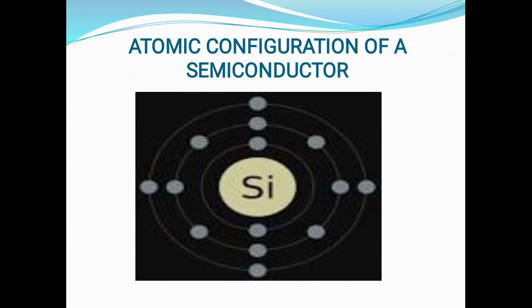The next elemental semiconductor is germanium. Its band gap energy is 0.75 electron volt. That means the energy needed to move an electron from the valence band to the conduction band is just 0.75 eV. These are the basic elemental semiconductors.